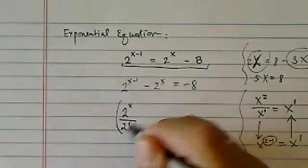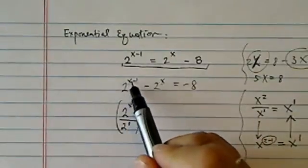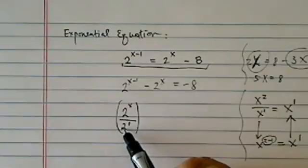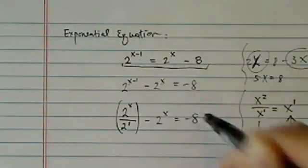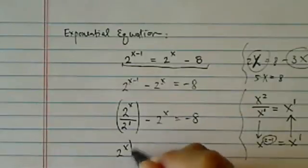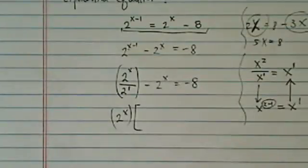So over here, I rewrote 2 to the x minus 1 as 2 to the x divided by 2 to the 1. The reason I want to do that, hopefully you can see it, is because I want to pull the variable term out.